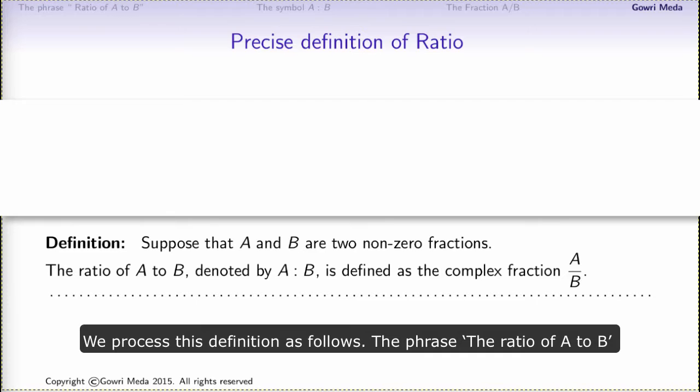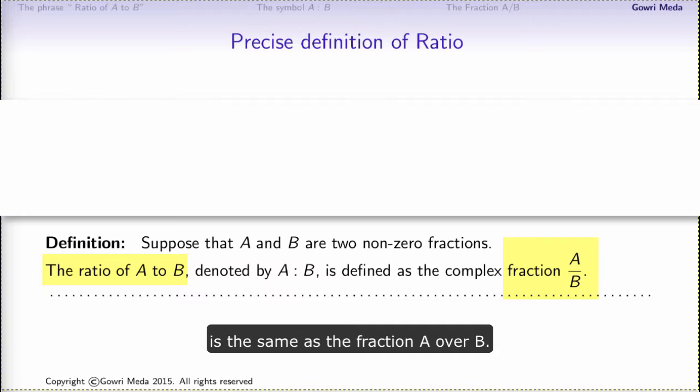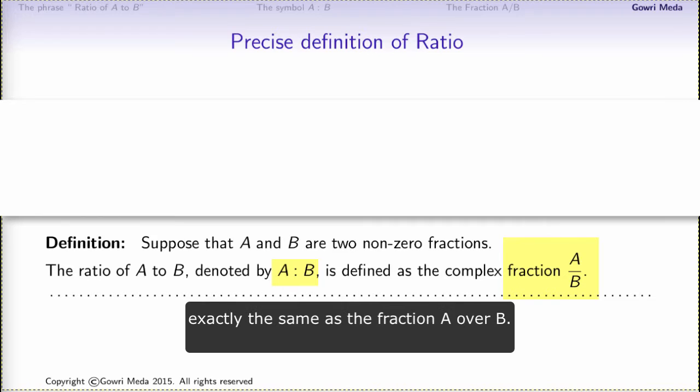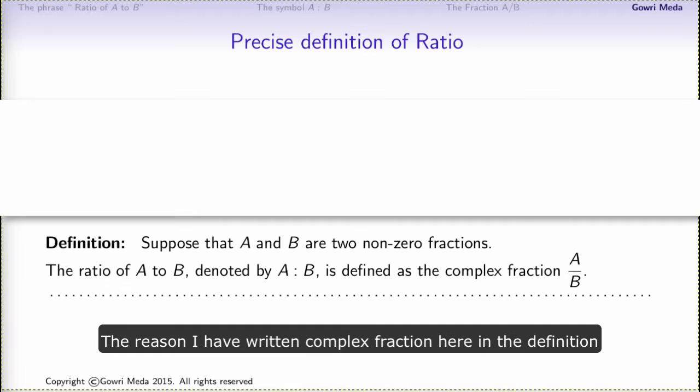We process this definition as follows. The phrase 'the ratio of A to B' is the same as the fraction A over B. Furthermore, this notation A colon B is exactly the same as the fraction A over B.